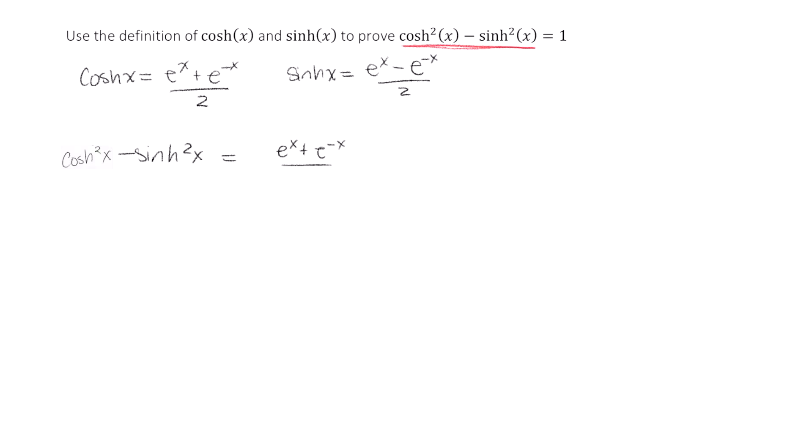That is e to the x plus e to the negative x divided by 2, squared. And then from that, we're going to subtract e to the x minus e to the negative x divided by 2, quantity squared.